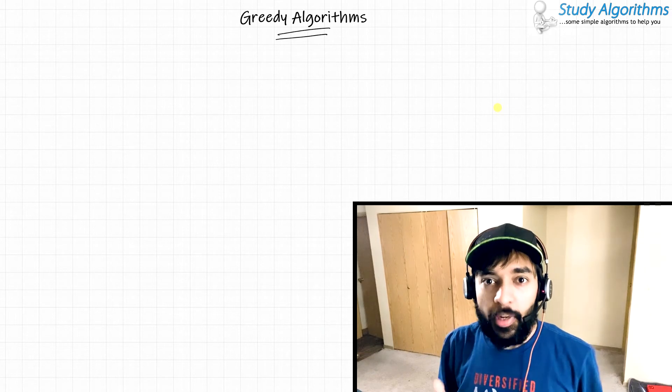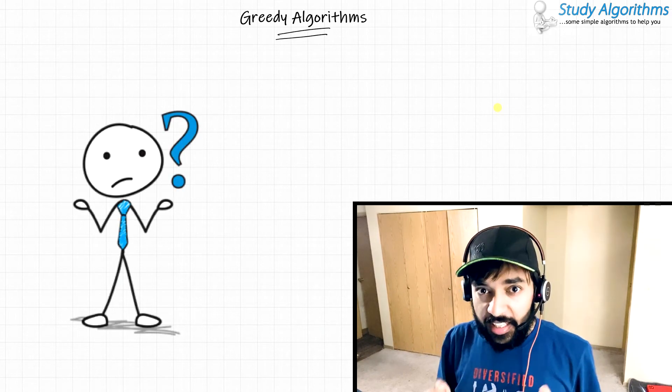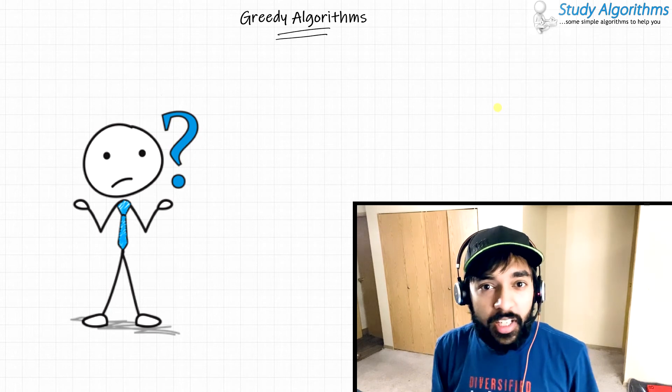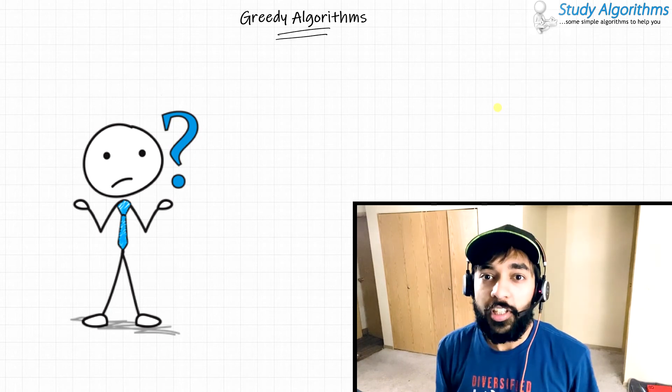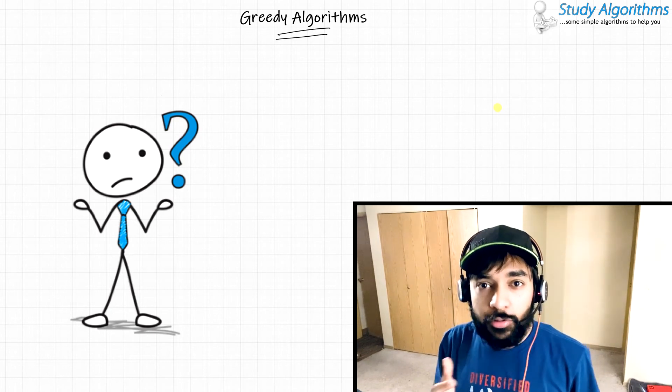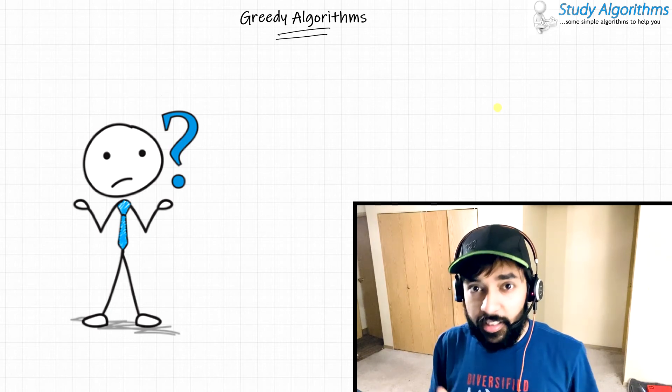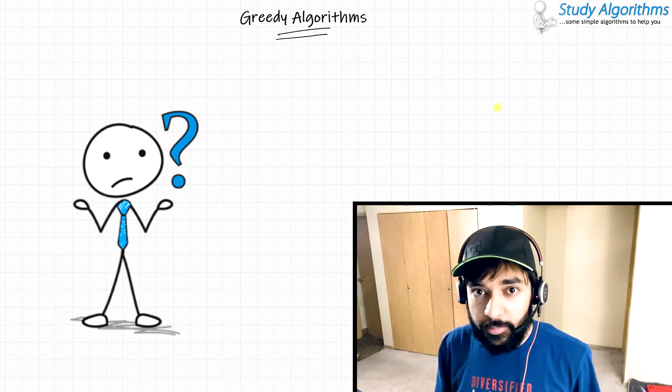What do you mean by an algorithmic paradigm? An algorithmic paradigm basically means how you can approach a problem in order to solve it. There can be different ways to solve a problem. Check the link in the description below to know more about these algorithmic paradigms.